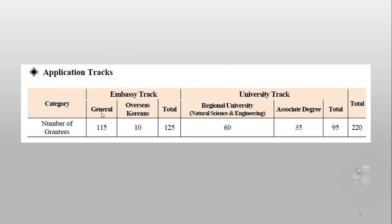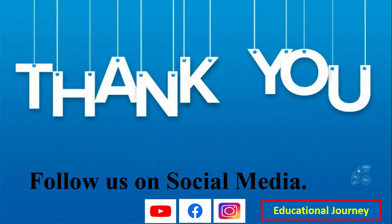These are the number of scholars selected for each track. For the Embassy Track — general meaning science, technology, business, social sciences, humanities, and arts — they will select 115 candidates. For the University Track, they will select 60 students in natural science and engineering. In total, 220 students will be selected, which includes 35 associate degrees and 10 Korean nationals.